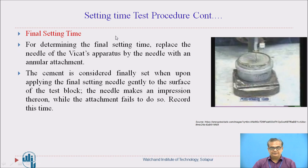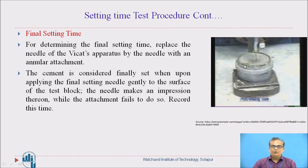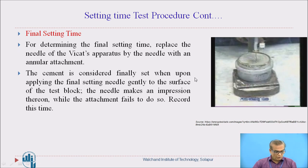For determining the final setting time, the initial setting time needle is replaced with the final setting time needle. This needle has a pointed needle at the centre and an annular attachment around it. The cement paste will be called finally set when the needle makes an impression on the paste but the annular attachment fails to do so. That particular moment is recorded and reported as the final setting time of cement. Time is measured from addition of water to cement to this moment. The final setting time should not be more than 600 minutes, that means 10 hours — there is a maximum limit on final setting time.